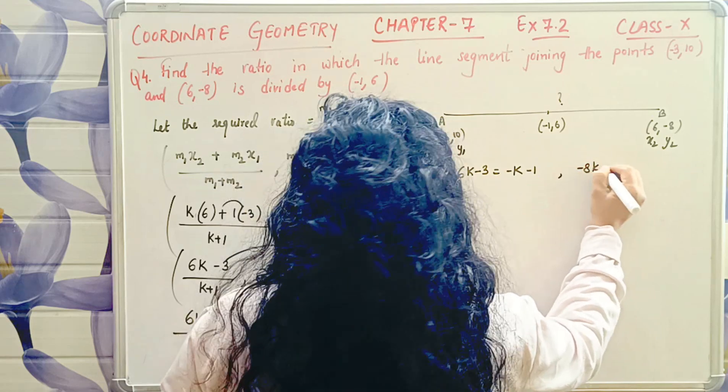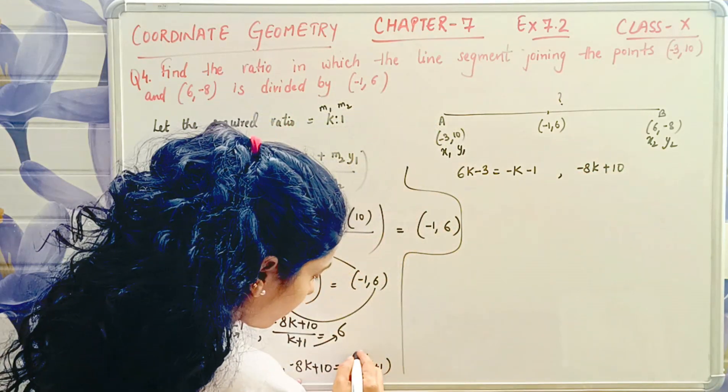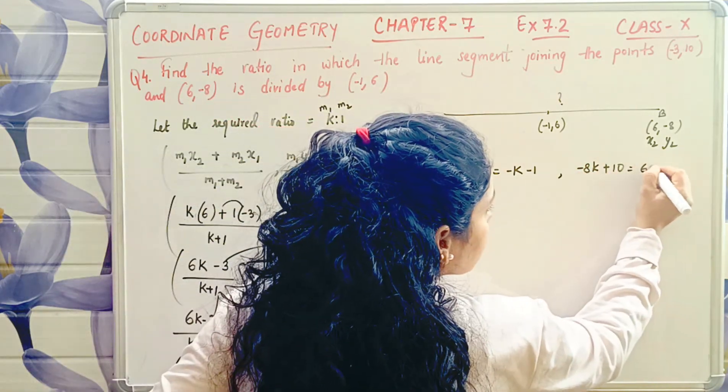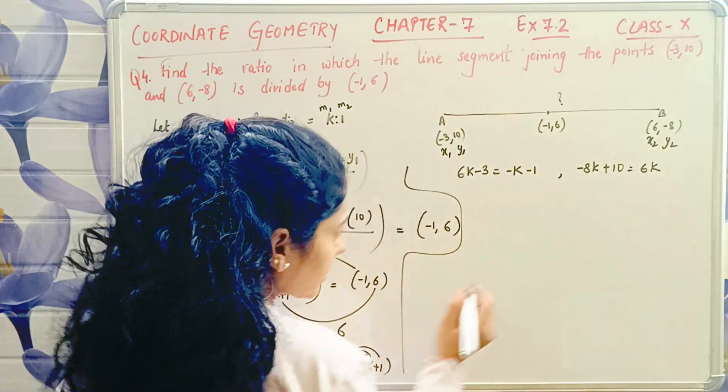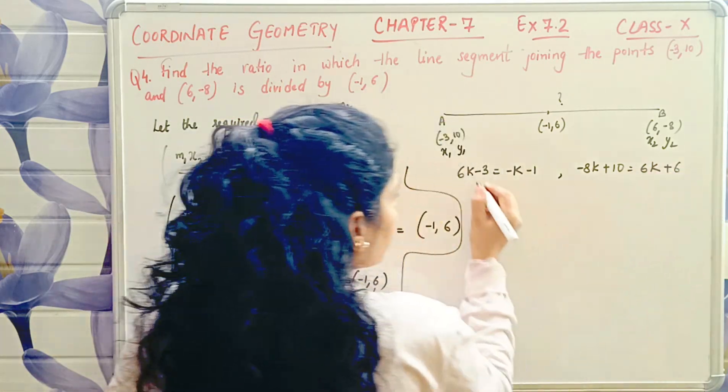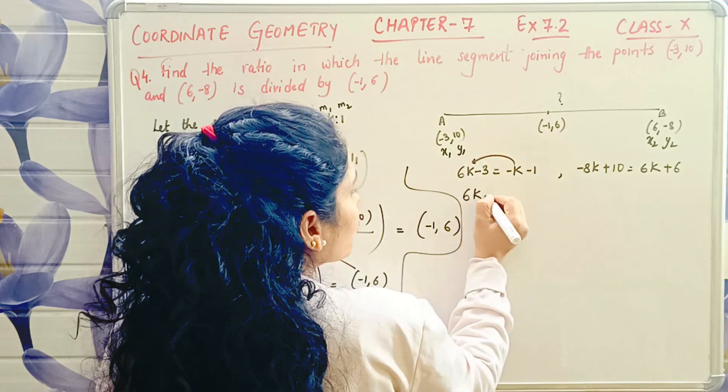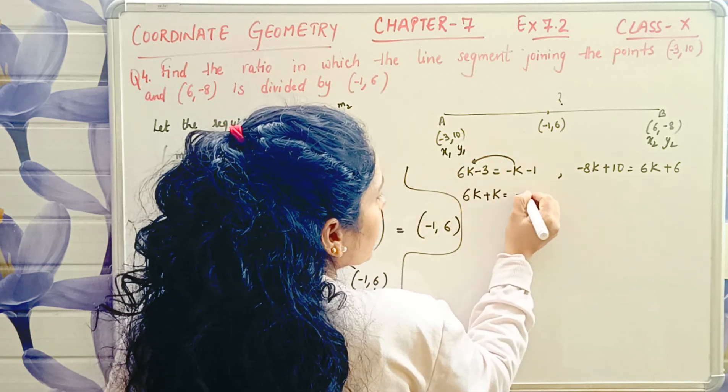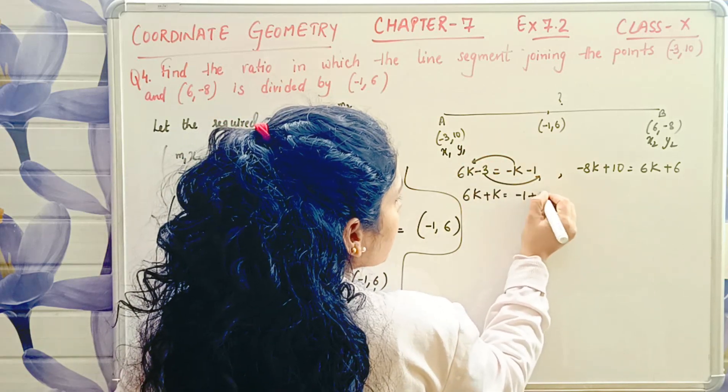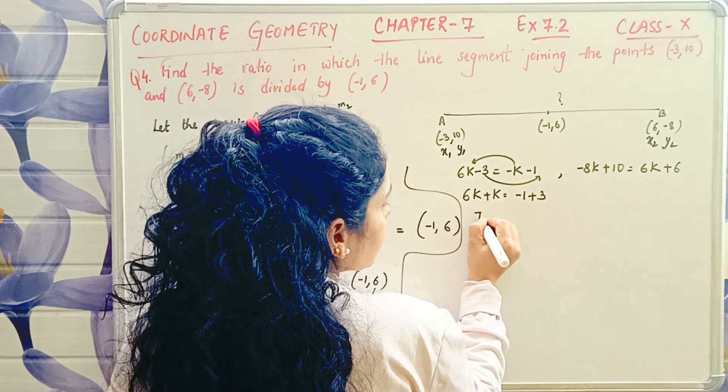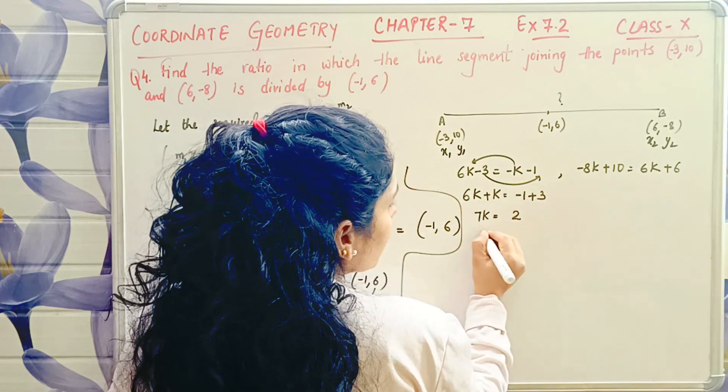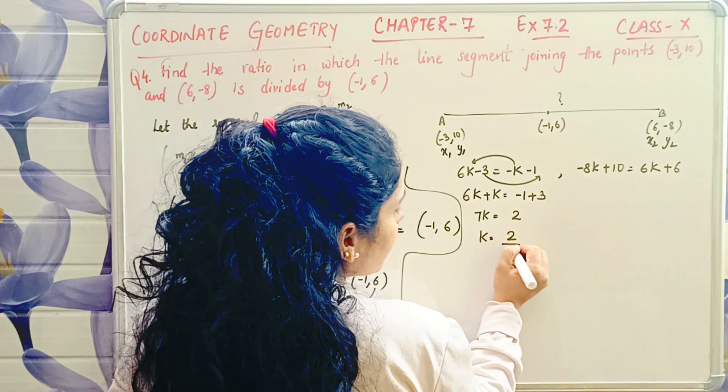6k - 3 equals -1 into k which is -k, -1 into 1 which is -1. On the other side, -8k + 10 equals 6k, 6 into 1 is 6. So 6k minus k comes here, plus k. -1 minus 3 goes there, so plus 3. 6 and 1 is 7k equal to 2. k comes as 2 by 7.